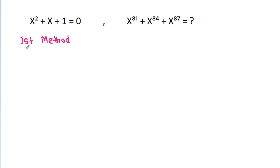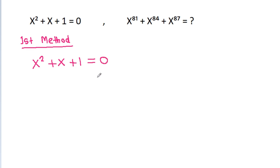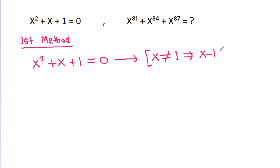We have x squared plus x plus 1 is equal to 0. And from here, we can say that x cannot be equal to 1, that means x minus 1 cannot be equal to 0.